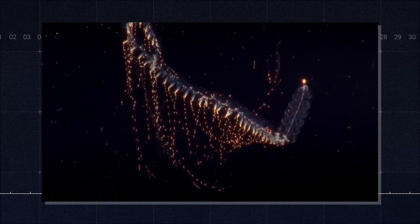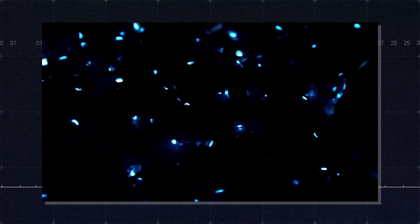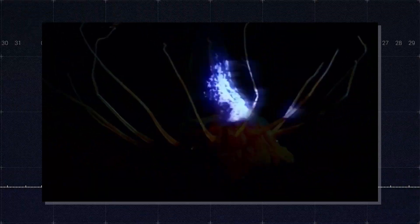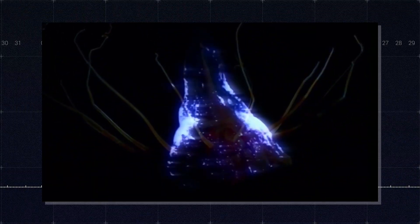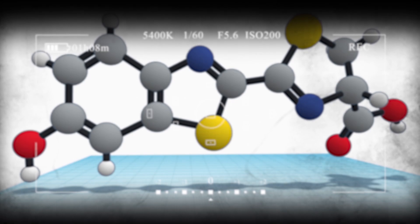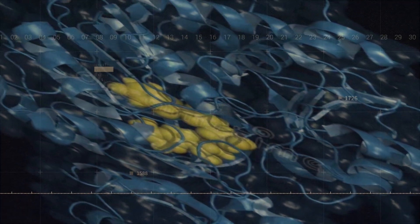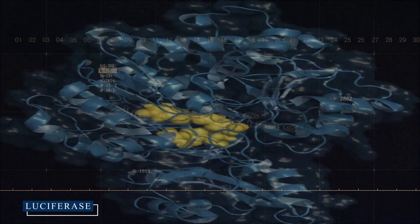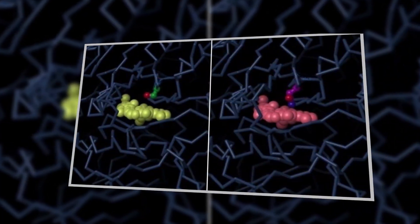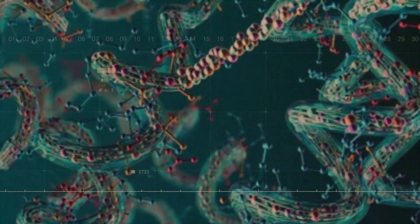This remarkable adaptation isn't just a captivating light show, it's a vital survival strategy that has shaped life in the abyss for millions of years. At its core, bioluminescence is a chemical reaction occurring within an organism's body. This process involves a light-emitting molecule called luciferin reacting with an enzyme known as luciferase. When these two components combine in the presence of oxygen, energy is released in the form of light.